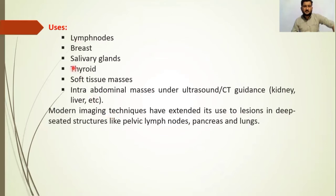Fine needle aspiration cytology is used for lymph nodes, breast, salivary gland, thyroid, soft tissue masses, and intra-abdominal masses. Imaging techniques have extended its use to lesions in deep-seated structures like pelvic lymph nodes, pancreas, and lungs.